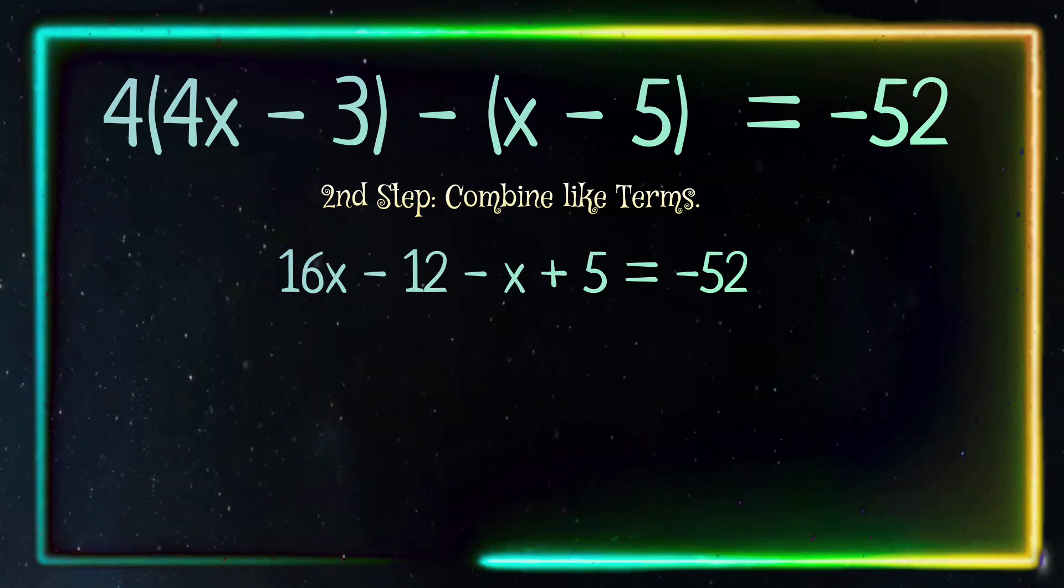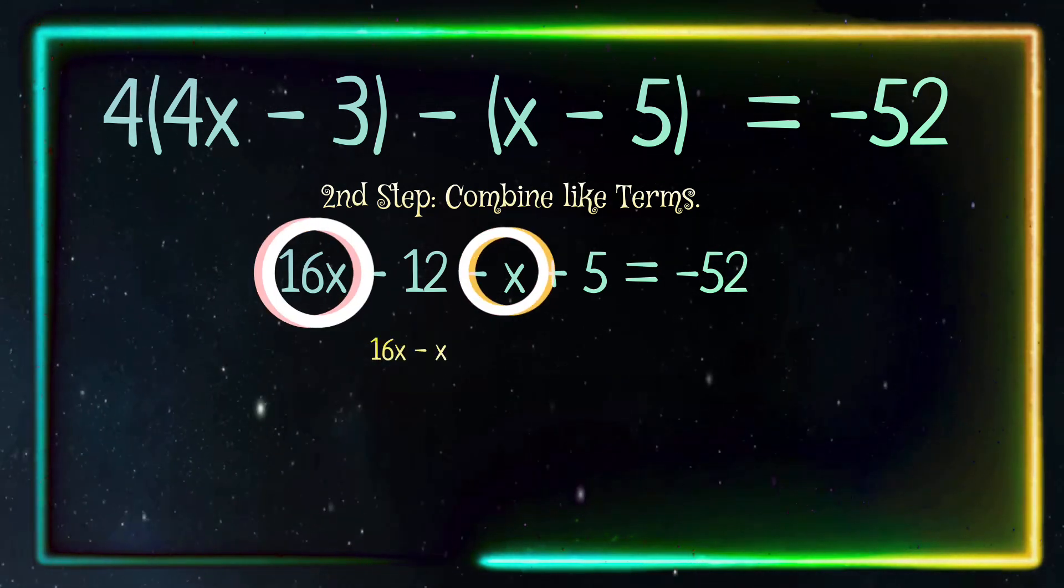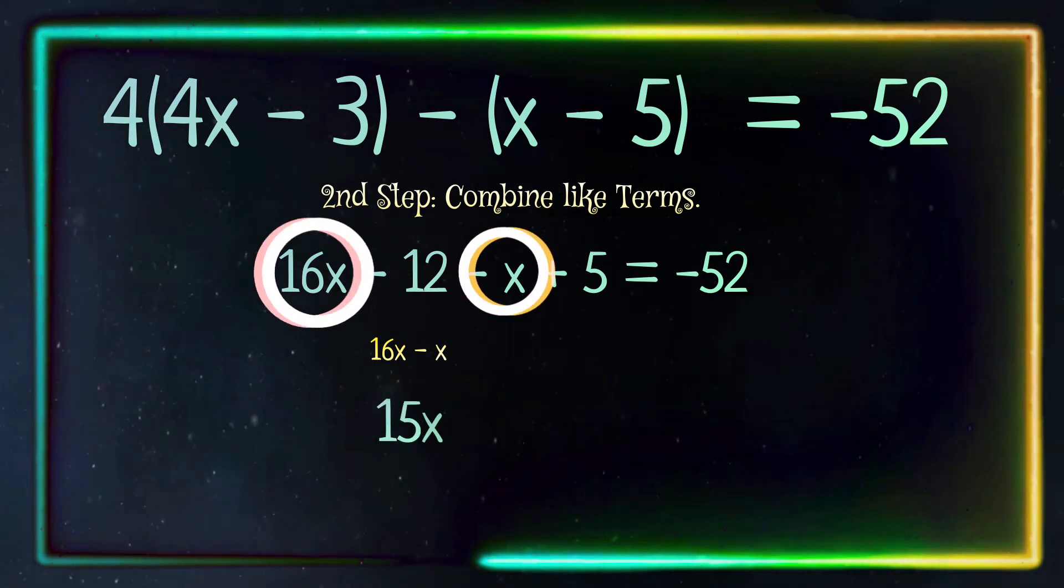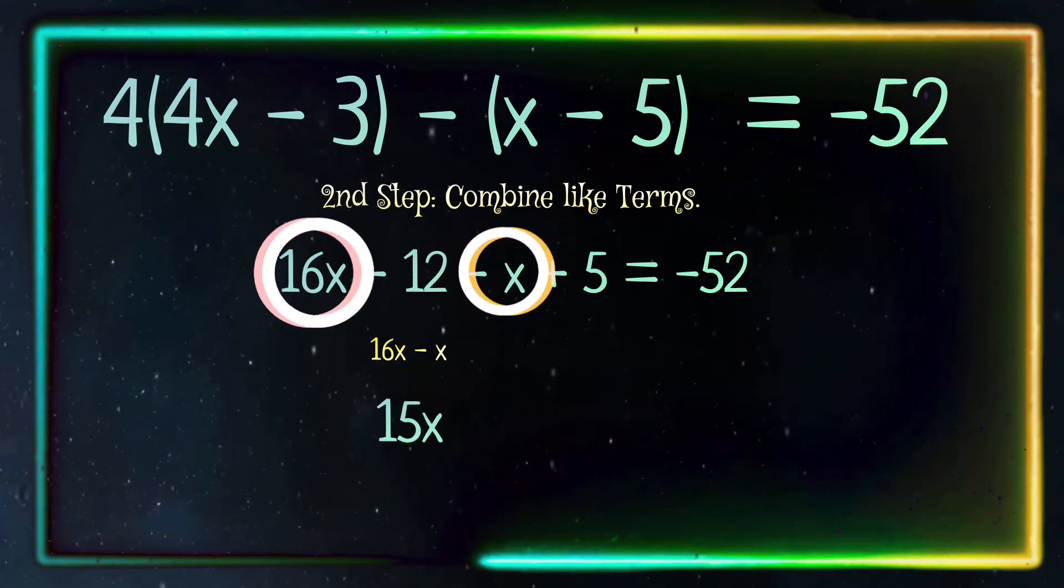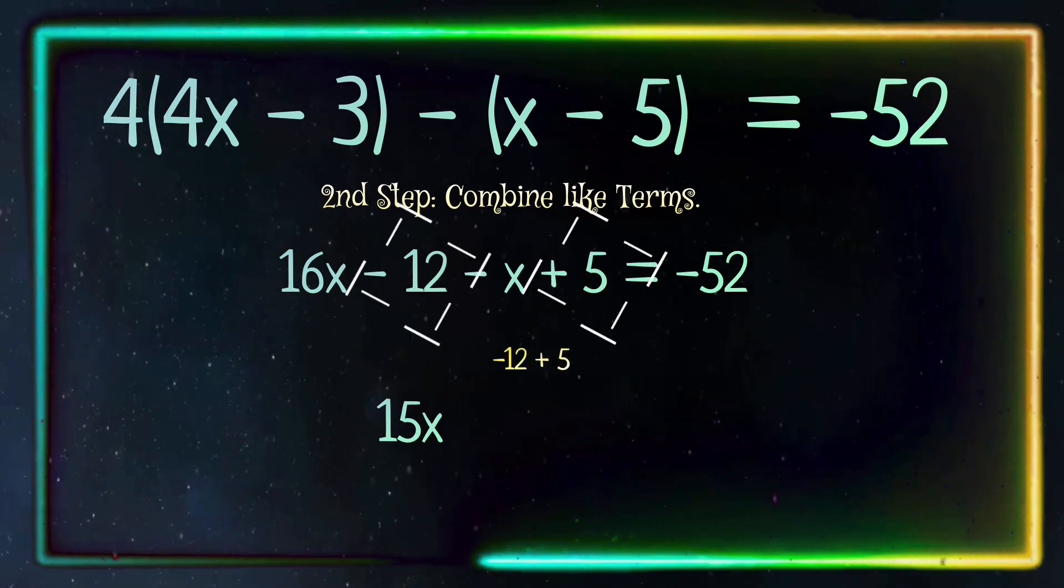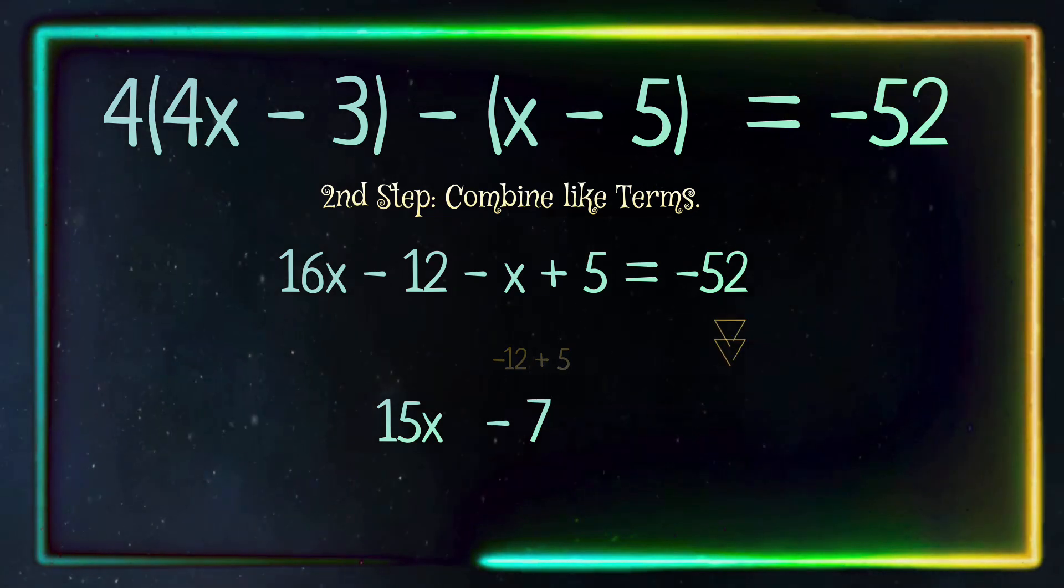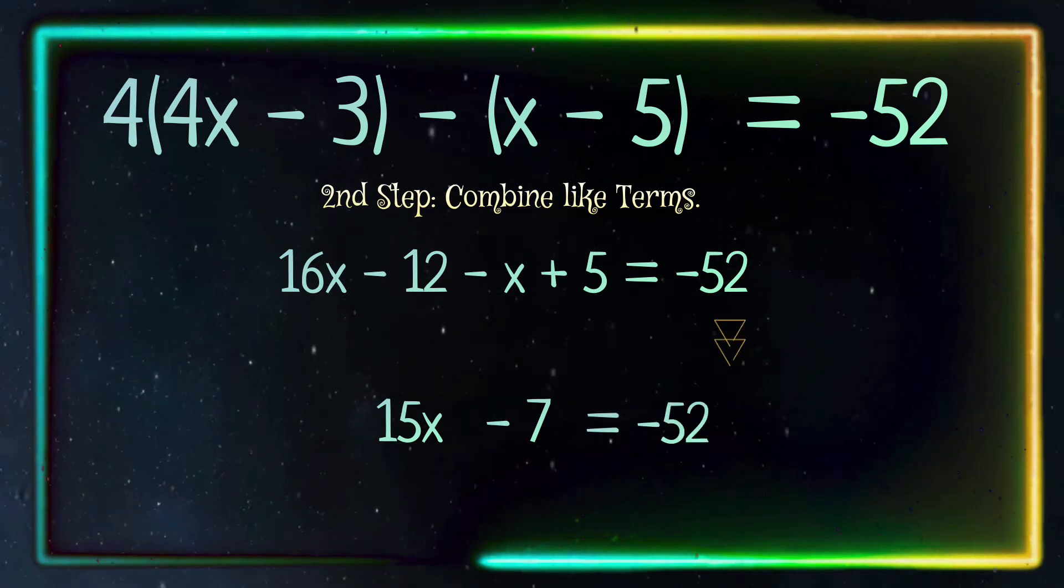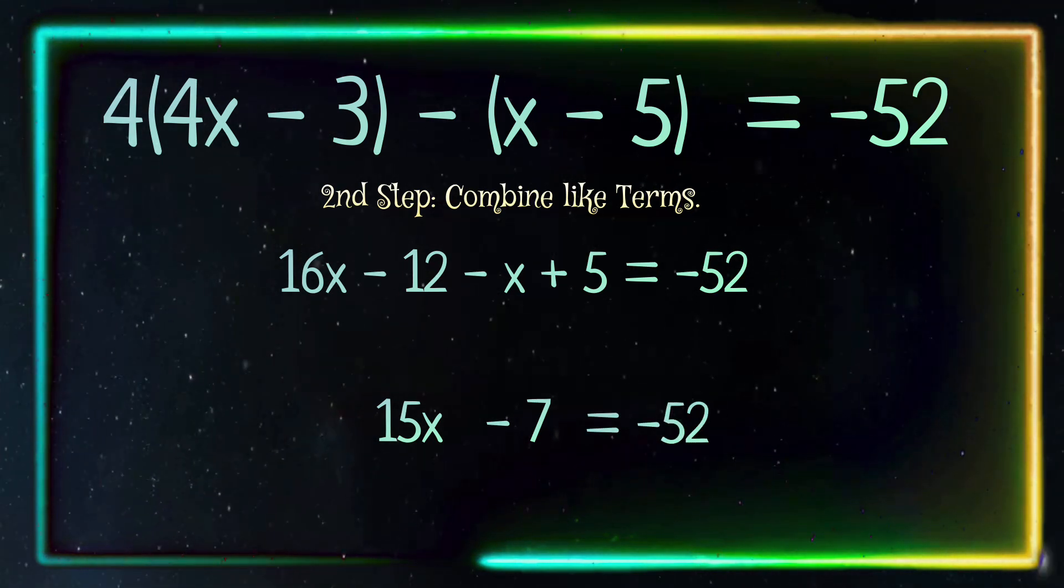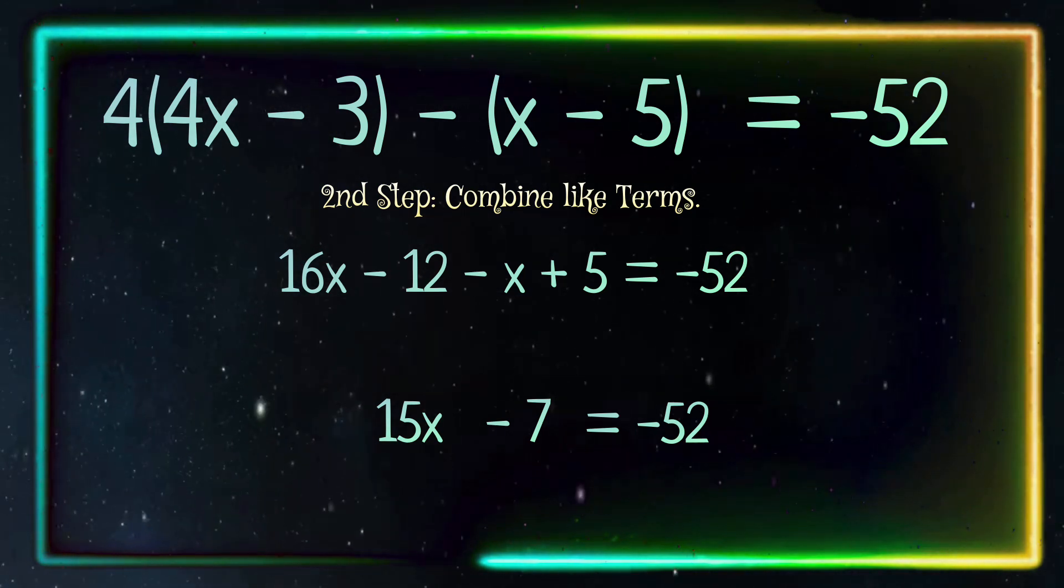We will start off with the x terms. 16x minus x equals 15x. And now our constants. Negative 12 plus 5 equals negative 7. Bring down the negative 52 and we are left with 15x minus 7 equals negative 52.